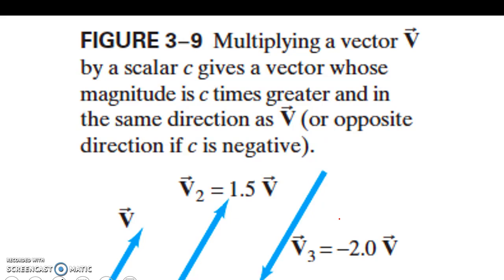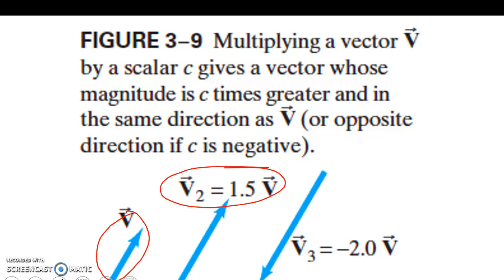If we multiply by a scalar, all we do is give the vector greater magnitude — it does not change direction. So if we know it's 1.5 times v, we multiply by 1.5. If it's negative 2 times v, we multiply by negative 2. That does not change the angle or the direction.